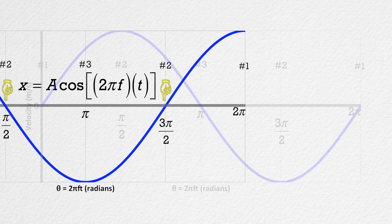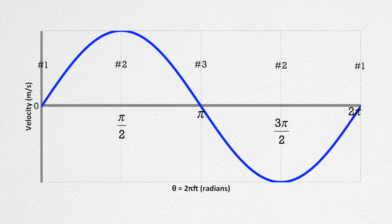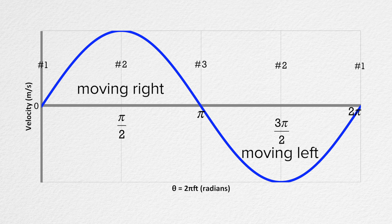Let's now look at a graph of velocity. Notice how this matches what we determined before. The velocity is zero at the two most extreme positions, positions one and three, and it has its maximum magnitude at the equilibrium position, or position number two. You can see if the mass is moving to the left or to the right based on whether the velocity is positive or negative.